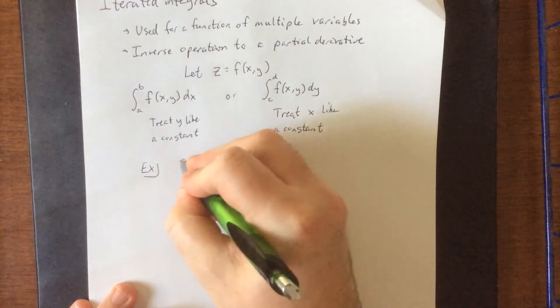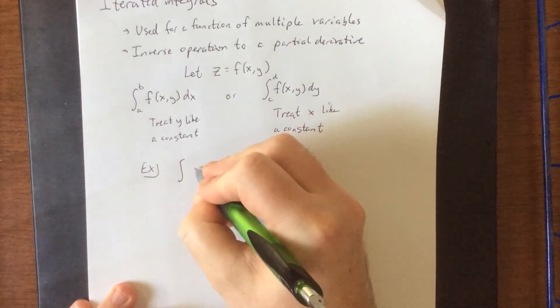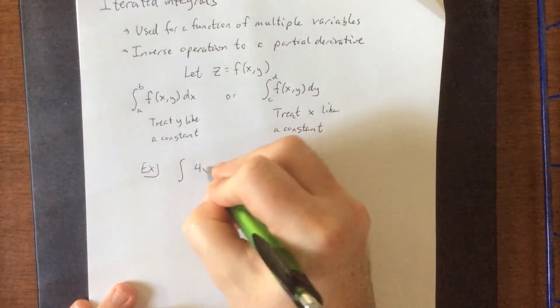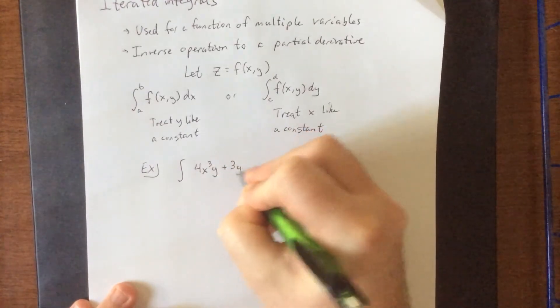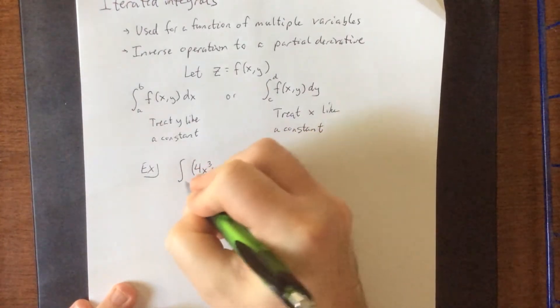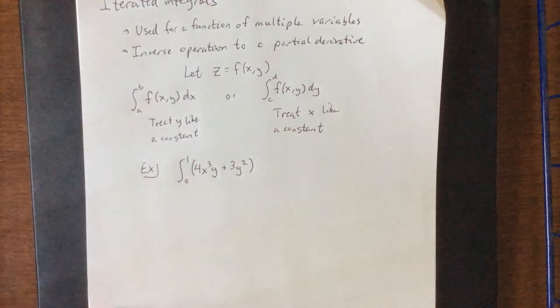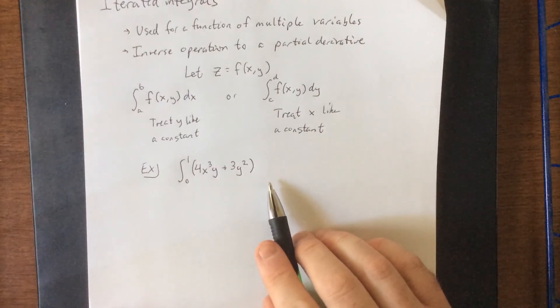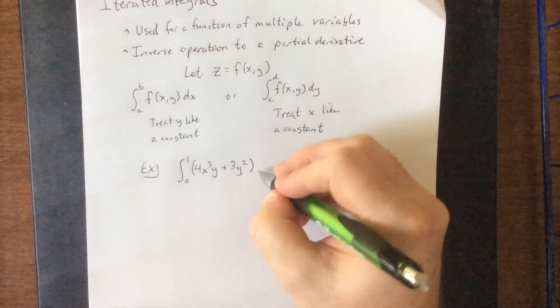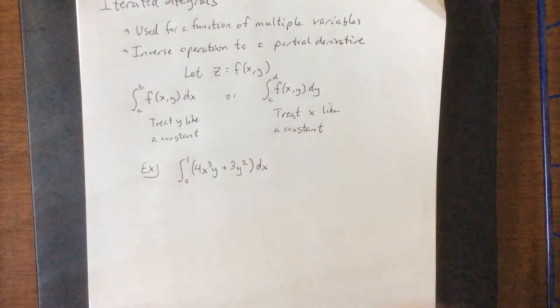For example, I'm going to bring in the iterated integral of 4x³y plus 3y² from 0 to 1, and if I don't specify a differential, then I have no idea what's going on. So tell you what, we'll actually do this one twice. We'll do it once dx, and then we'll do it once dy.